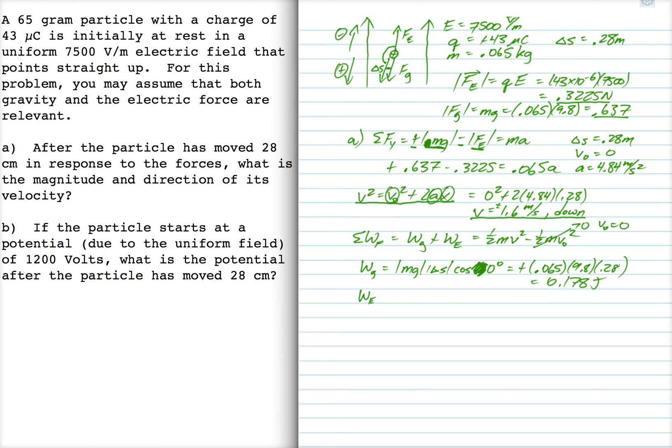The electric force, the work done by the electric force is QE delta S cosine 180. Here, the angle between the displacement vector and the electric force vector is 180 degrees. So that's going to be minus 43 microcoulombs times 7500 times 0.28. So the work done by the electric force is minus 0.0903.